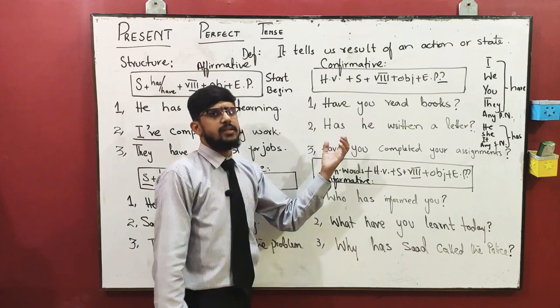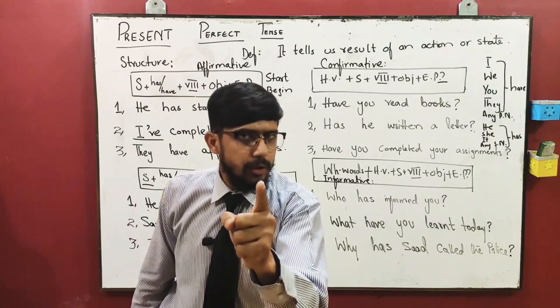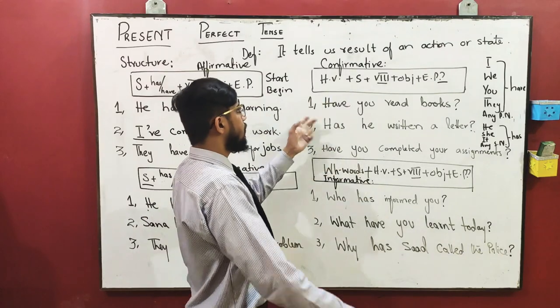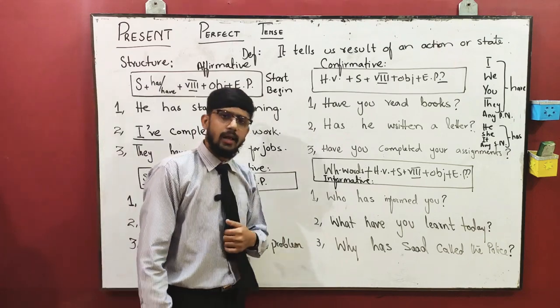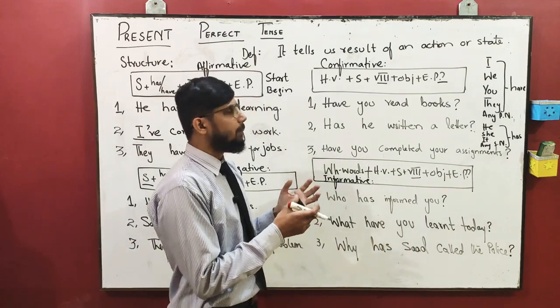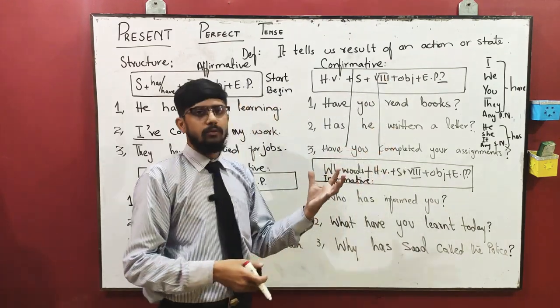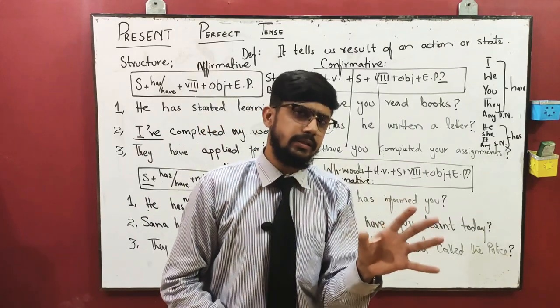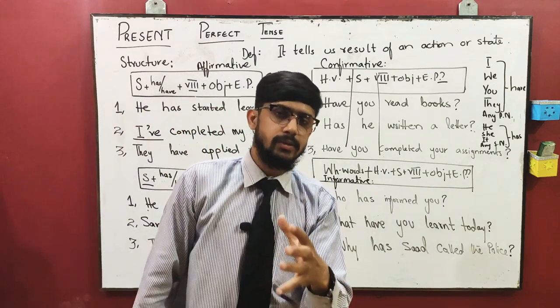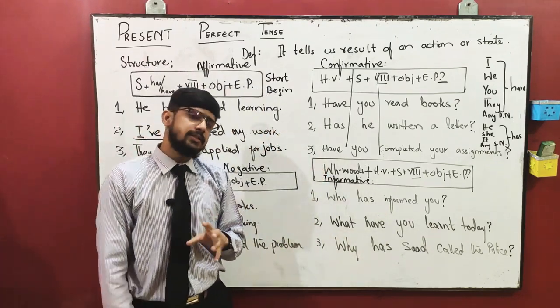The sentence we have is: have you read books? Kya aapne kitaabein padhi hain? The second sentence is: has he written a letter? Kya usne khat likh liya hai? In this you can easily see the structure - first we're using helping verb, then we're using subject, the rest of the sentence - third form of verb and object and EP we're using. That is very easy, you can practice it at home.